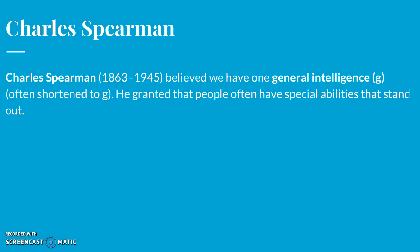Spearman granted that people often have special abilities that stand out. He used factor analysis — a statistical procedure that identifies clusters of related items — and noted that those who score high in one area, such as verbal intelligence, typically score higher than average in other areas, such as spatial or reasoning ability. He believed a common skill set, the G factor, underlies all intelligent behavior, from navigating the sea to excelling in school.